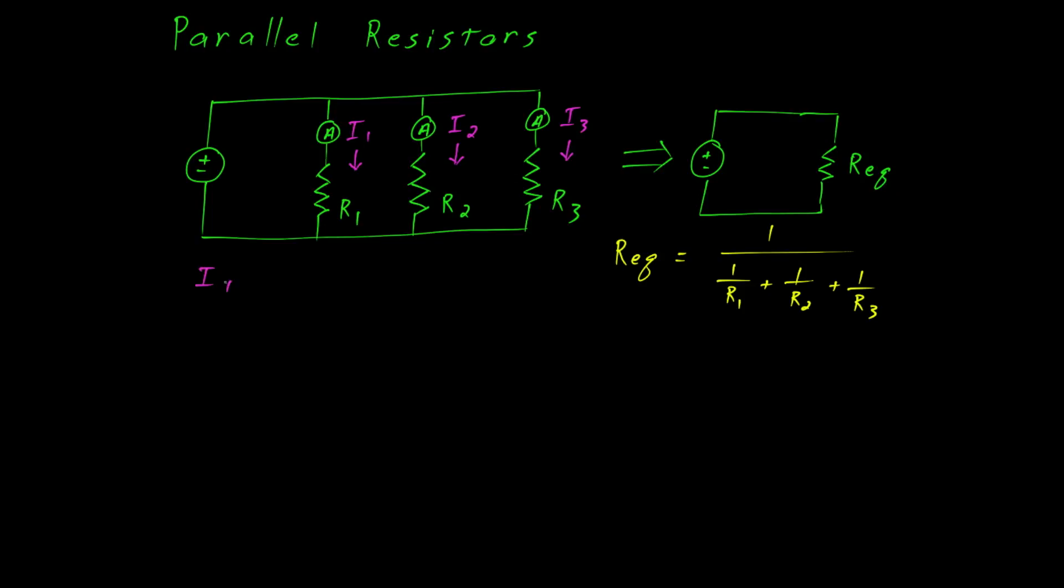We know that the total current, which we'll show here by adding yet another amp meter, is equal to the sum of the individual currents. So I total is equal to I1 plus I2 plus I3. Let's not forget that the total current, as shown in the circuit on the right, is the same as that from the original circuit.